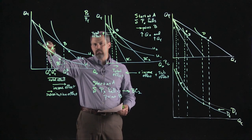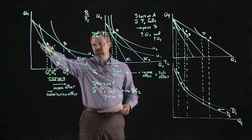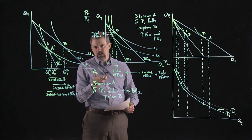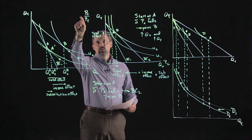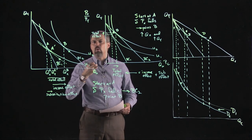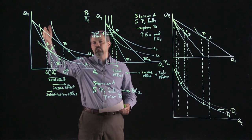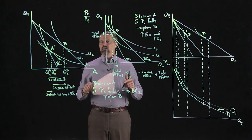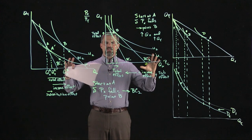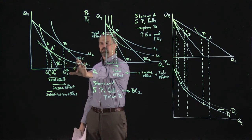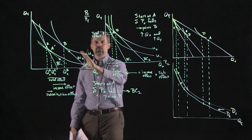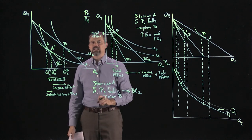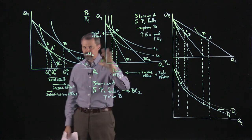The substitution effect always shows up as movement around a single indifference curve — you substitute away from good Y toward good X because good X is getting relatively cheaper (PX/PY falls). The income effect is what allows the consumer to climb to a higher indifference curve. Now let's clear this and redo it with a price increase, which will be more concise and easier to see.